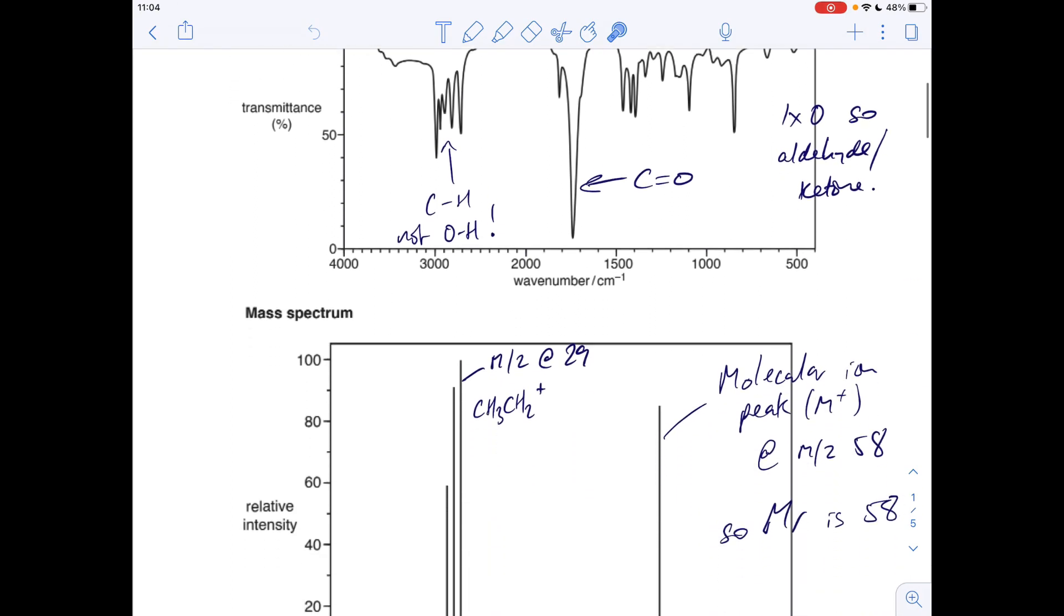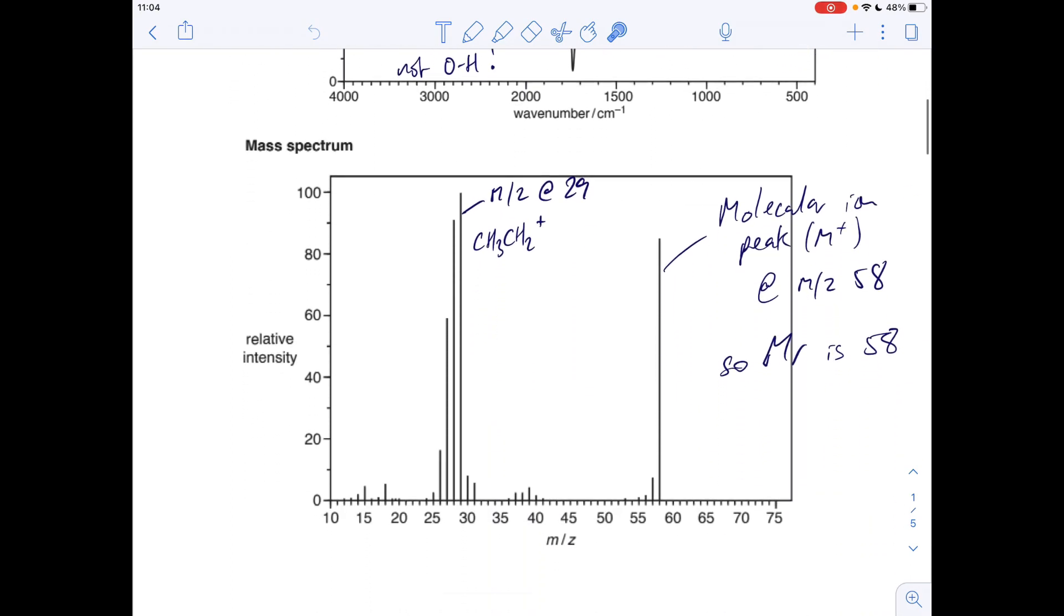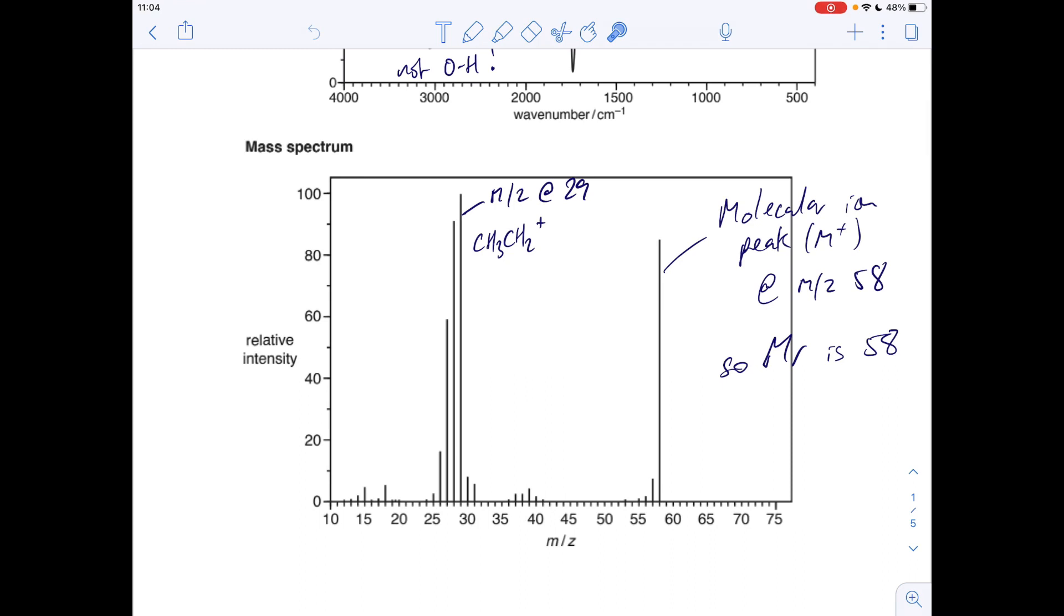So if we move on to the mass spectrum now, first place I would always look is the peak furthest to the right. Furthest to the right, that's the molecular ion peak or M plus peak you can call it. So you can see that's coming out at 58 or M over Z 58, so that's telling us that the MR is 58. So I would get my students to write that onto the spectrum.